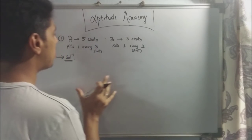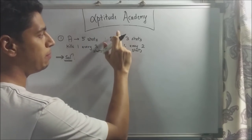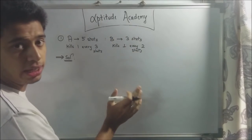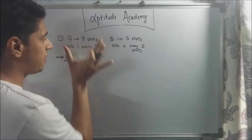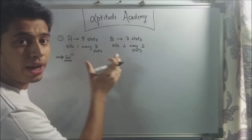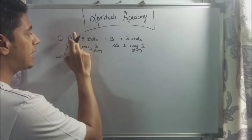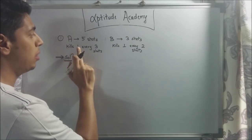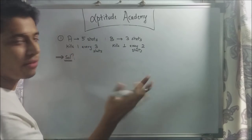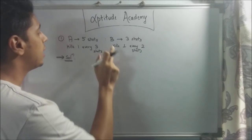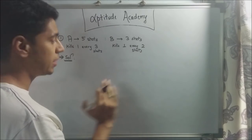For the first problem, A takes 5 shots for every time that B takes 3 shots. So in the time that B takes 3 shots, A would have taken 5 shots — A takes more shots than B. Now, A manages to kill 1 every 3 shots, and B manages to kill 1 every 2 shots.